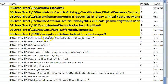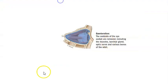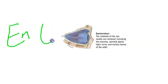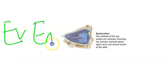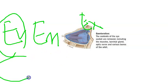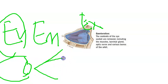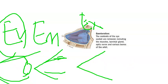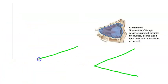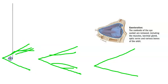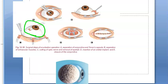Definitions: Evisceration — remove the contents inside the eye, retaining the sclera. Enucleation — remove the entire eyeball including sclera; muscles remain in orbit. Exenteration — everything is removed from the orbit. Indications for evisceration: panophthalmitis, expulsive choroidal hemorrhage, and anterior staphyloma — remember these three.